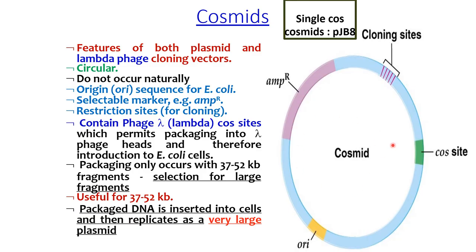pJB8 is a single-Cos Cosmid. It is a circular plasmid that does not occur naturally. An origin of replication sequence for E. coli is present, along with a selectable marker like ampicillin resistance, and restriction sites for the cloning of the gene of interest. It contains a phage lambda Cos site which permits packaging into lambda phage heads and therefore introduction into E. coli cells. Packaging only occurs with 37 to 52 KB fragments, selecting for large fragments. Packaged DNA is inserted into the cell and then replicated as a very large plasmid.